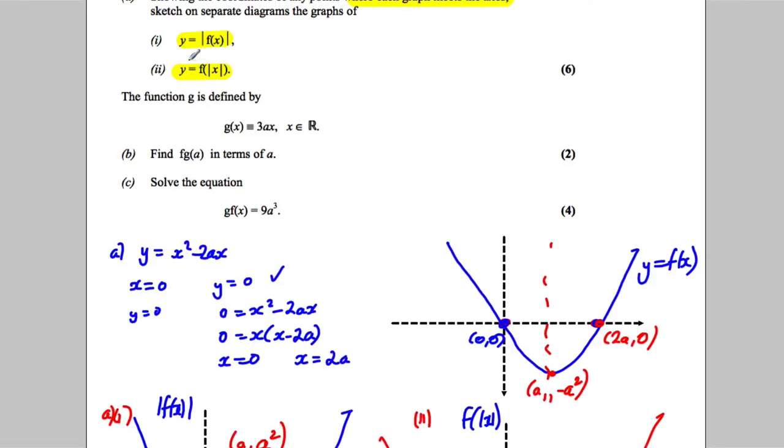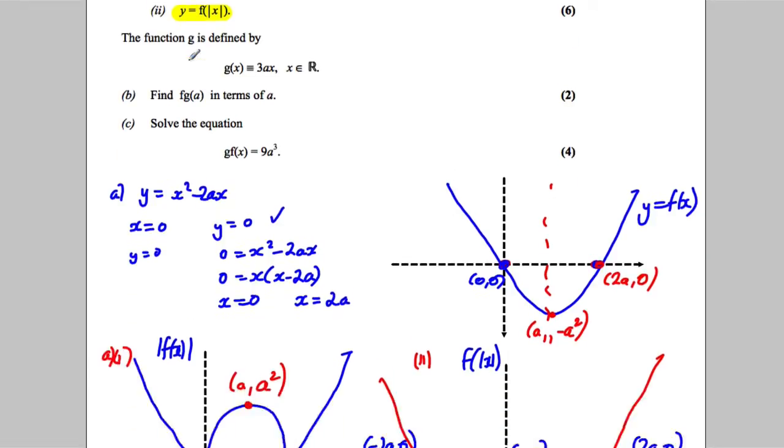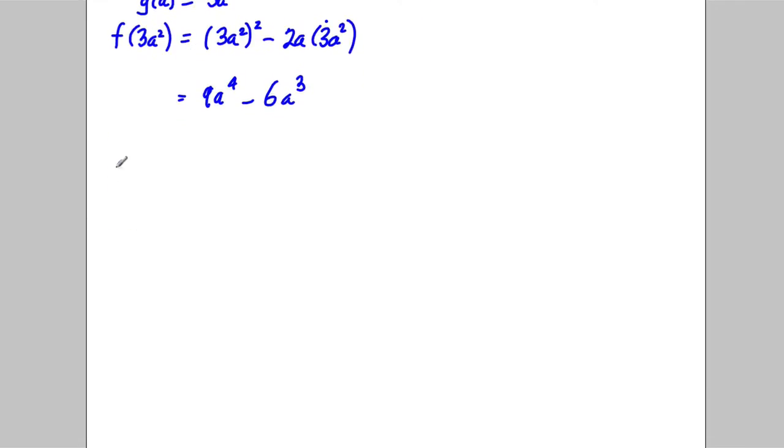Looking up here for part c, it says solve g(f(x)) = 9a³. So for part c, we're asked to solve g(f(x)) = 9a³.